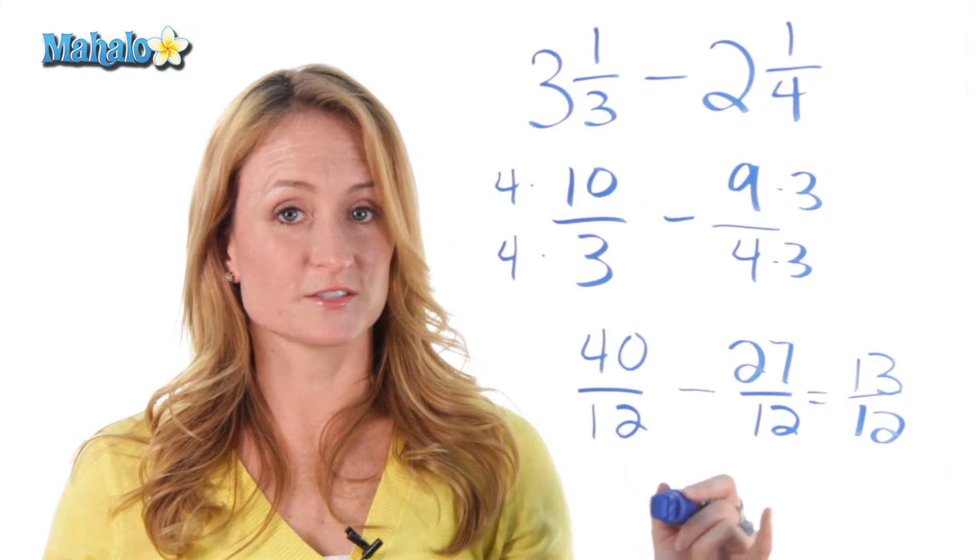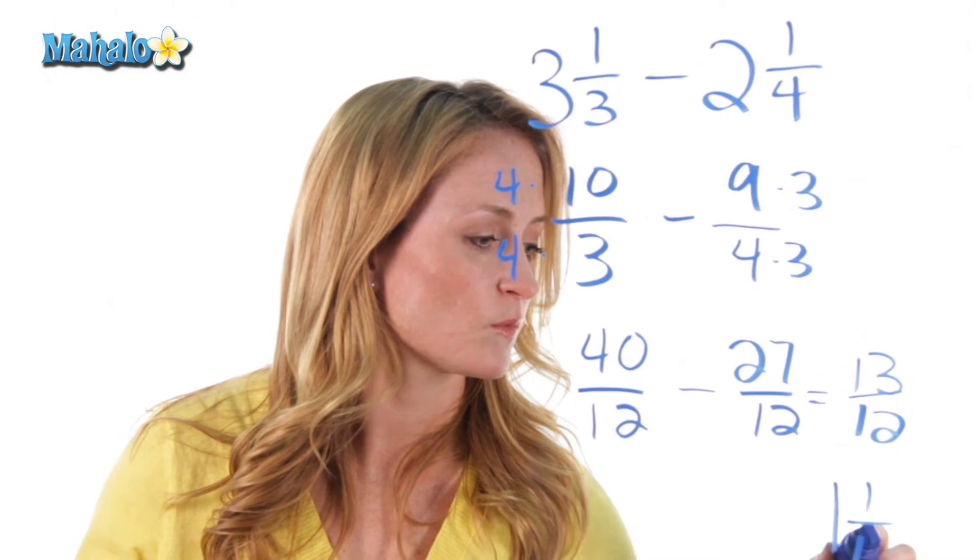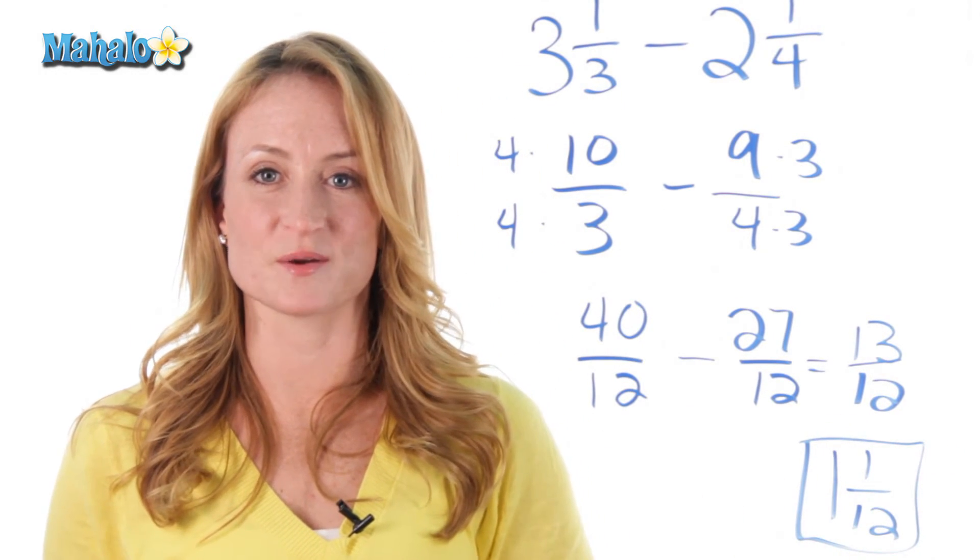And we also know how to turn a fraction into a mixed number. So, this 13 would reduce to 1 and 1 over 12. And that's how you add or subtract mixed numbers.